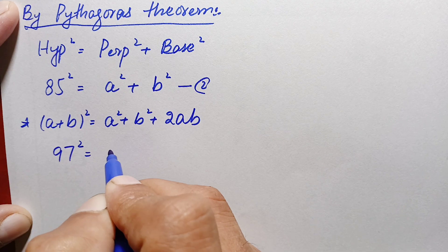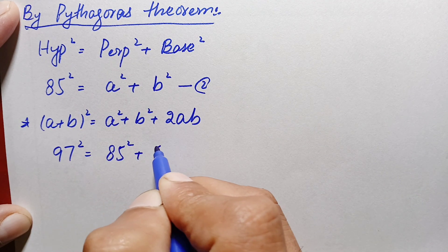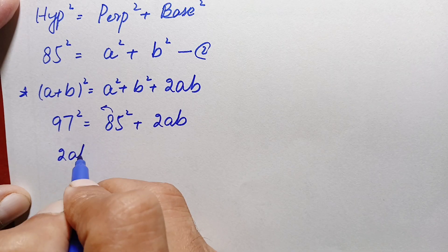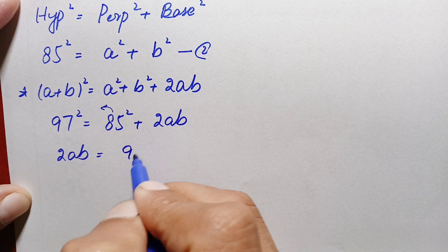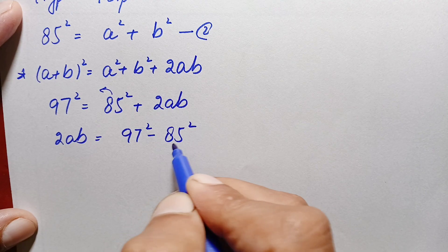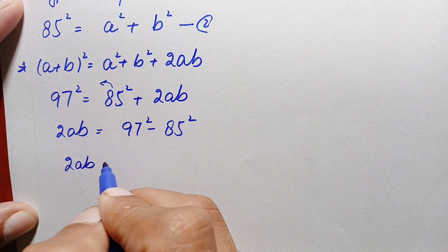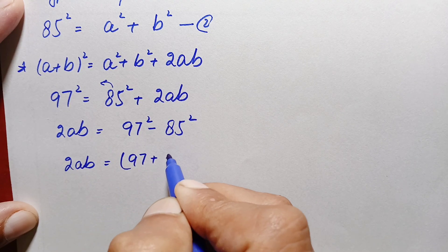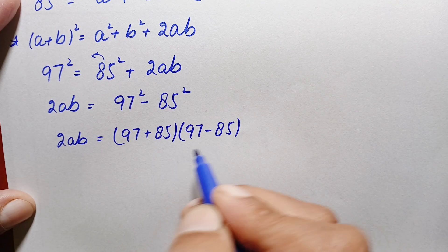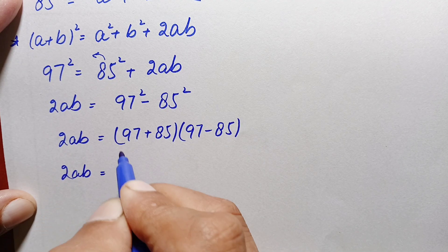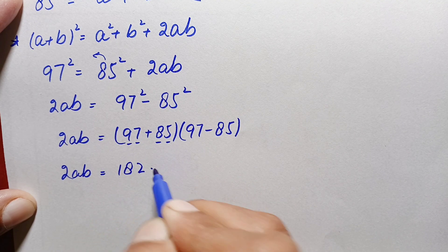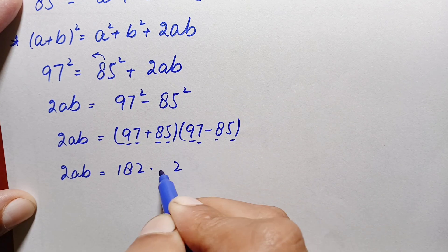So this becomes 97² = 85² + 2ab. Taking 85² to the left-hand side: 2ab = 97² − 85². Applying the difference of squares identity, a² − b² = (a+b)(a−b), the right-hand side becomes (97 + 85)(97 − 85) = 182 × 12.